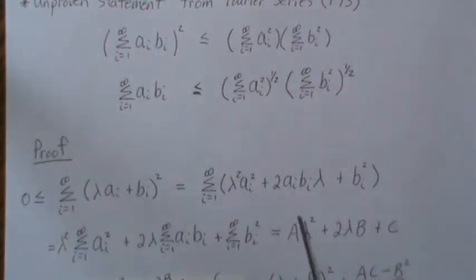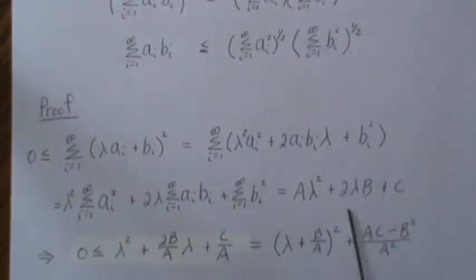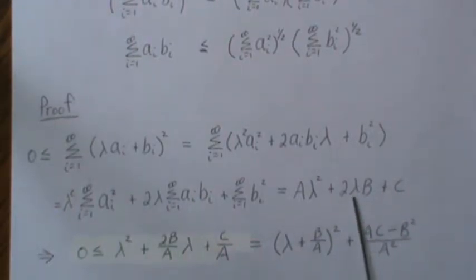And now we have a second order polynomial that's positive. So now let's find the values of lambda that make this true.